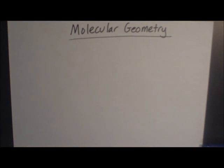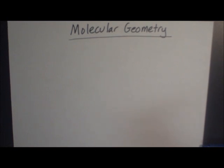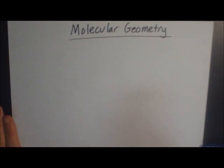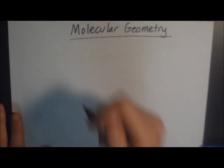Up to this point we've been dealing with Lewis structures. But the problem with a Lewis structure is that it doesn't show the geometry of a molecule — the actual 3D representation of a molecule in space. So to deal with the molecular geometry, what you need to do is figure out the angles involved in the molecule.